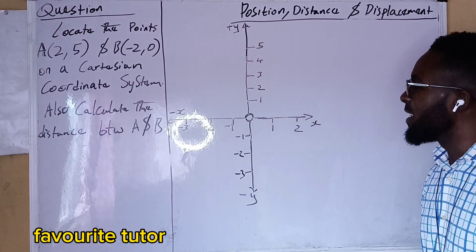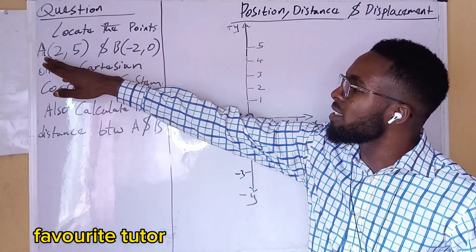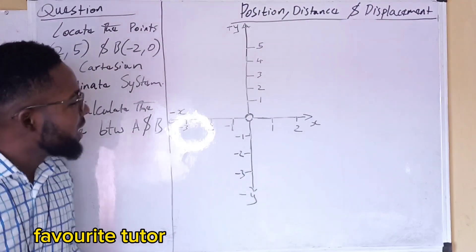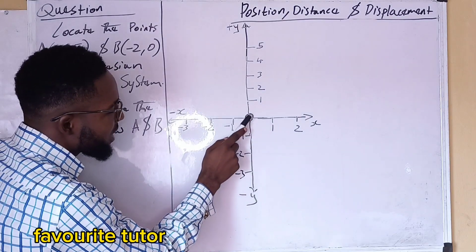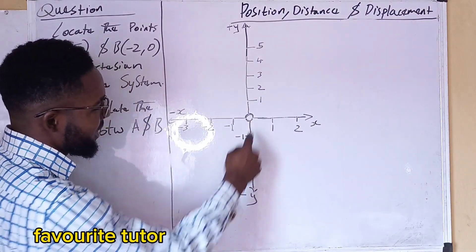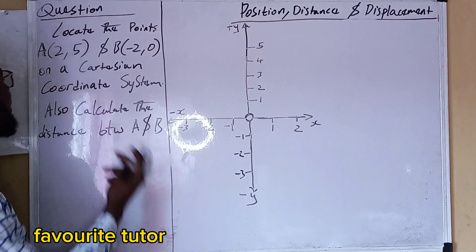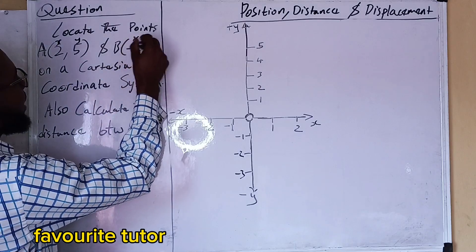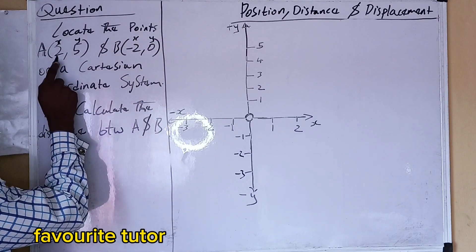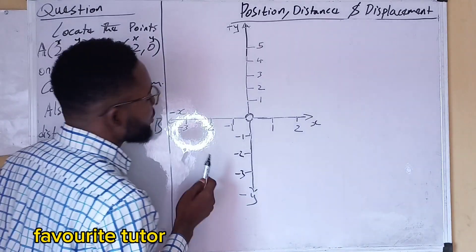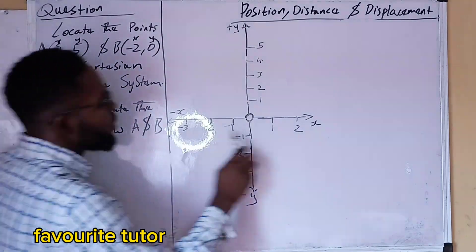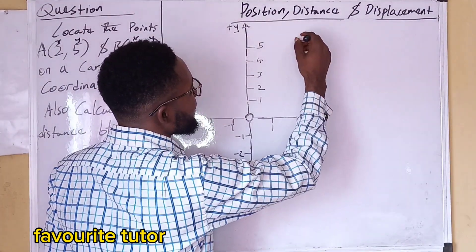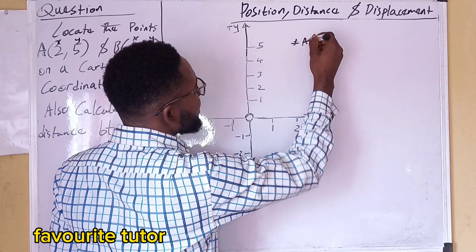We are going to locate points A and B. We'll start from the frame of reference, which is also known as the origin — right here, 0. So for point A, x is 2 and y is 5. x is positive 2, so we go to the positive side. x is 2 and y is 5 — right here. This is point A.